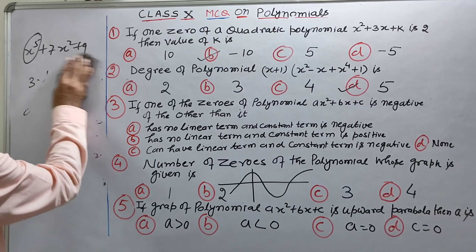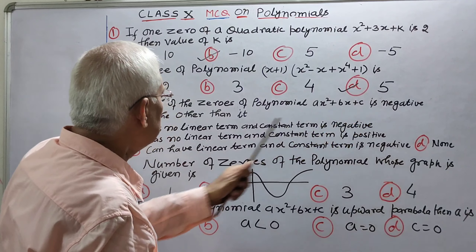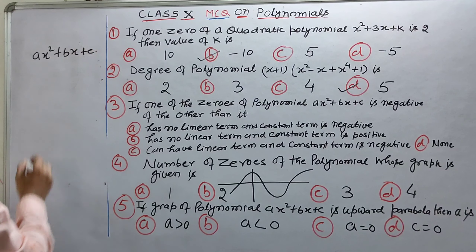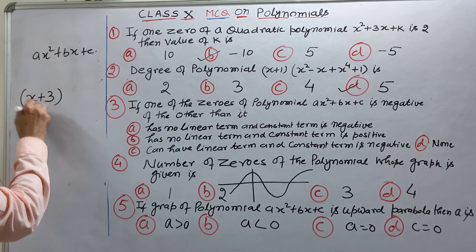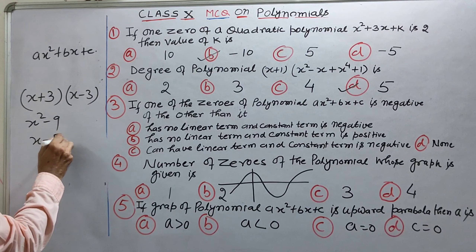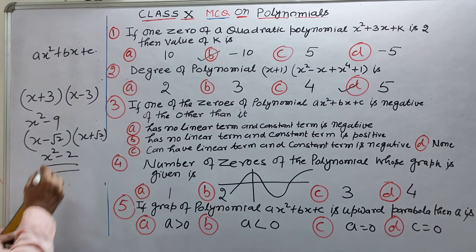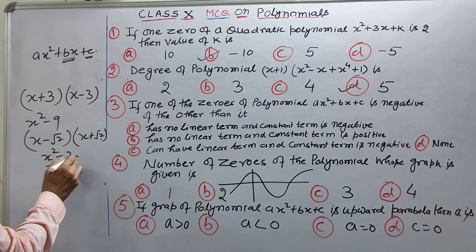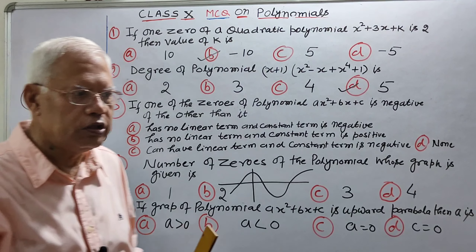Question number 3: one of the zeros of the polynomial ax square plus bx plus c is negative of the other. Agar iska zero ek three hai, toh doosra minus three hoga. Toh inko multiply karenge toh x square minus 9 aayega. Maan lijiye ek zero root two hai aur doosra minus root two hai, toh inko multiply karne par x square minus 2. Yani is tarah ke functions mein linear term nahin hoga, aur c negative hona chahiye.